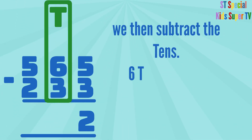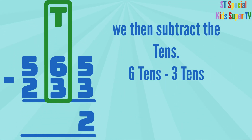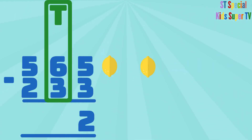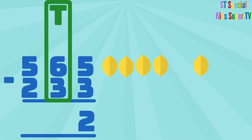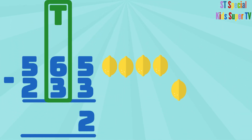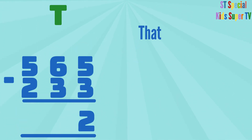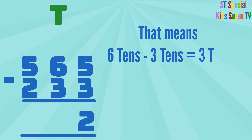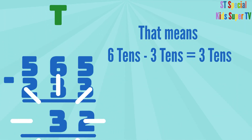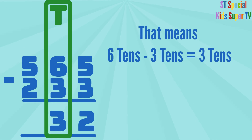We then subtract the tens: 6 tens minus 3 tens. 6 lemons minus 1, 2, 3 lemons equals 1, 2, 3 lemons. That means 6 tens minus 3 tens equals 3 tens. So you write the 3 under the tens column.